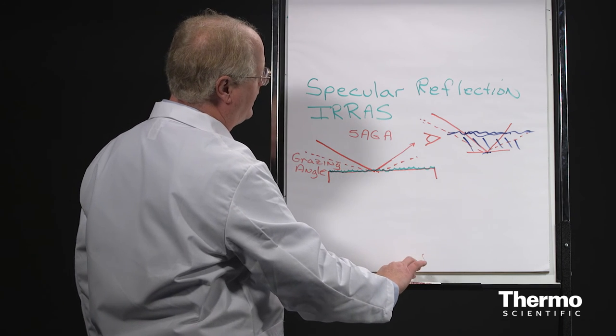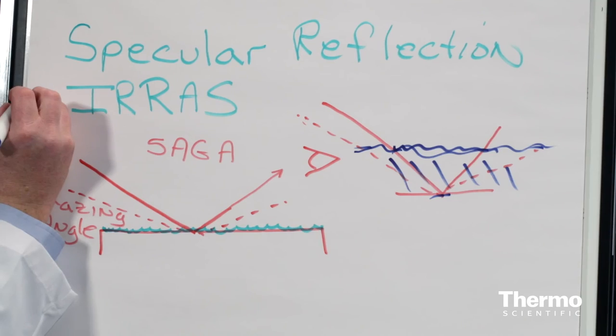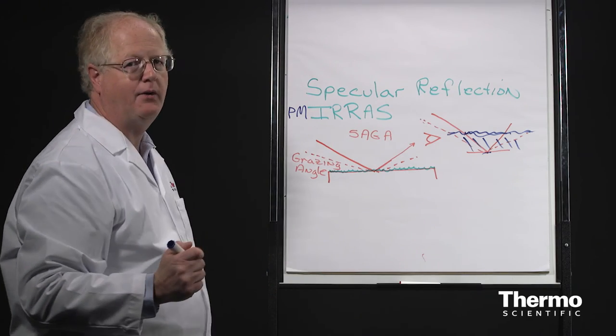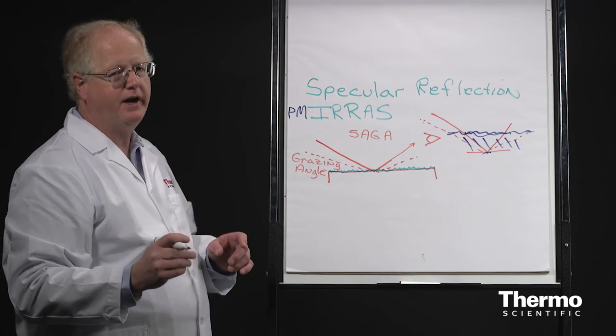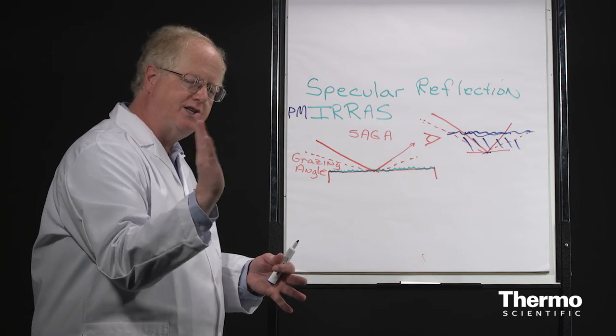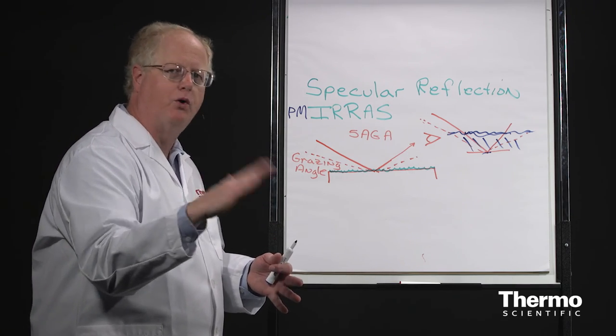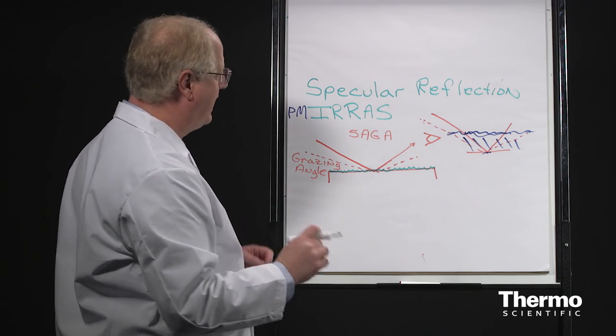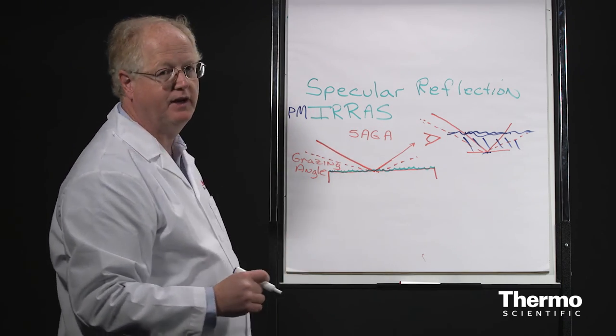But the trick we can play is what's called polarization modulation, PMI-RAS. In the case of PMI-RAS, you have a digital modulator that actually sits there and modulates the polarization back and forth, and then quickly collecting the two allows you to get real high sensitivity about the surface.